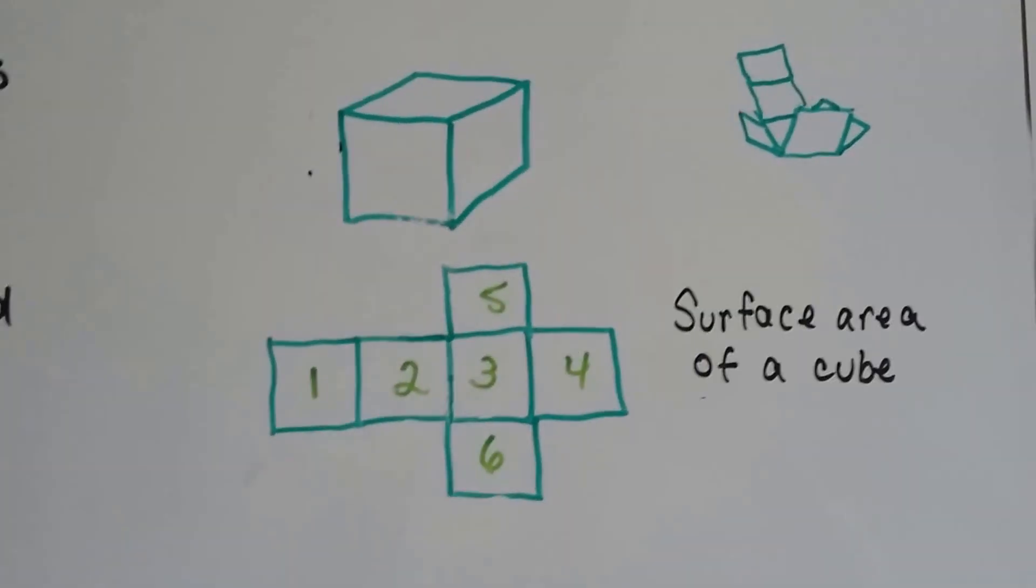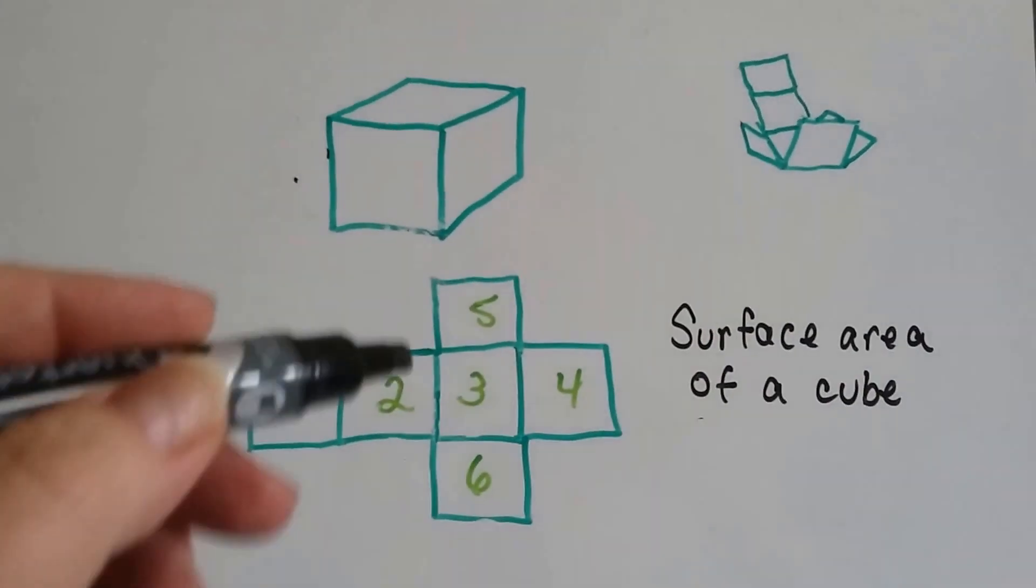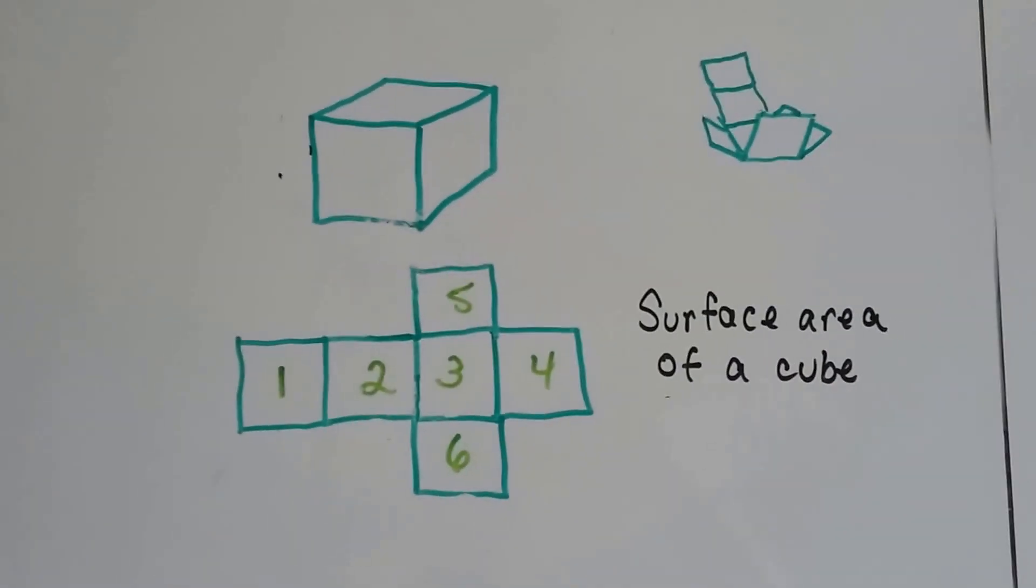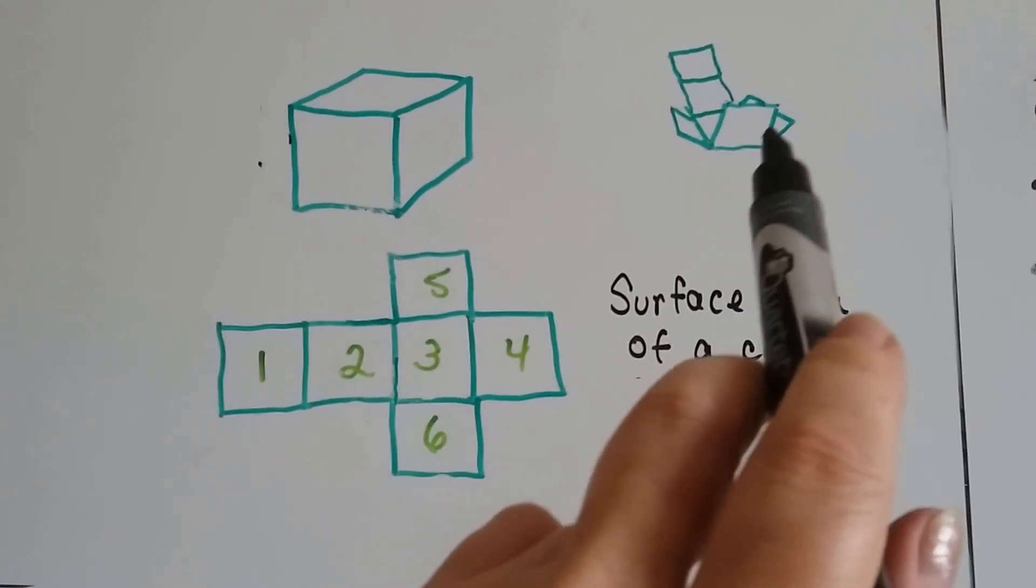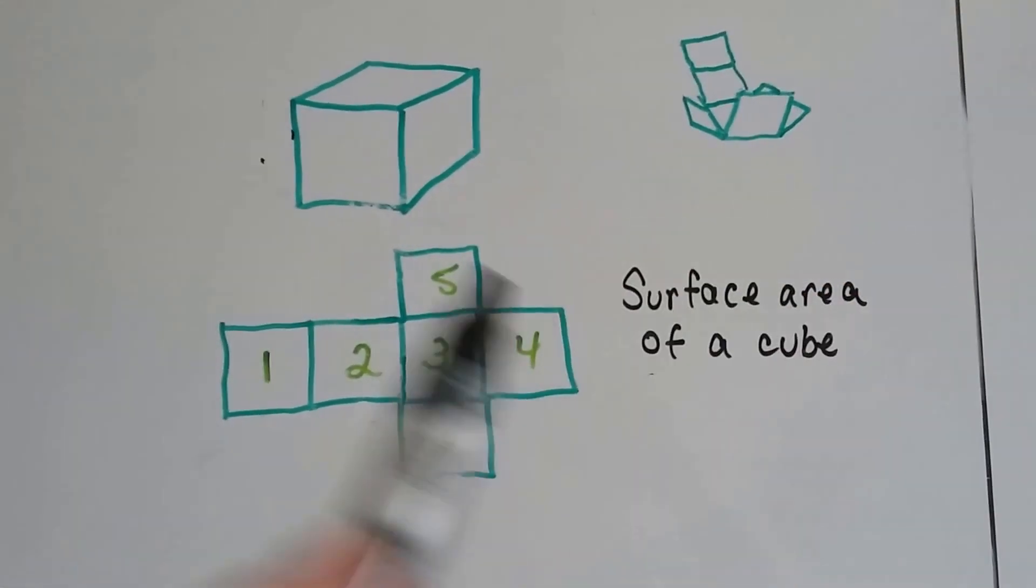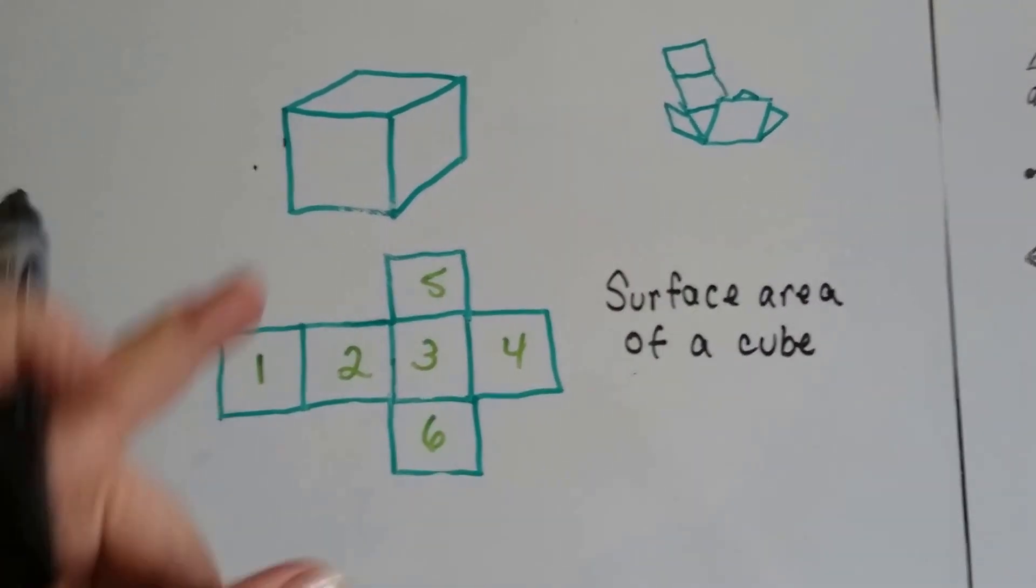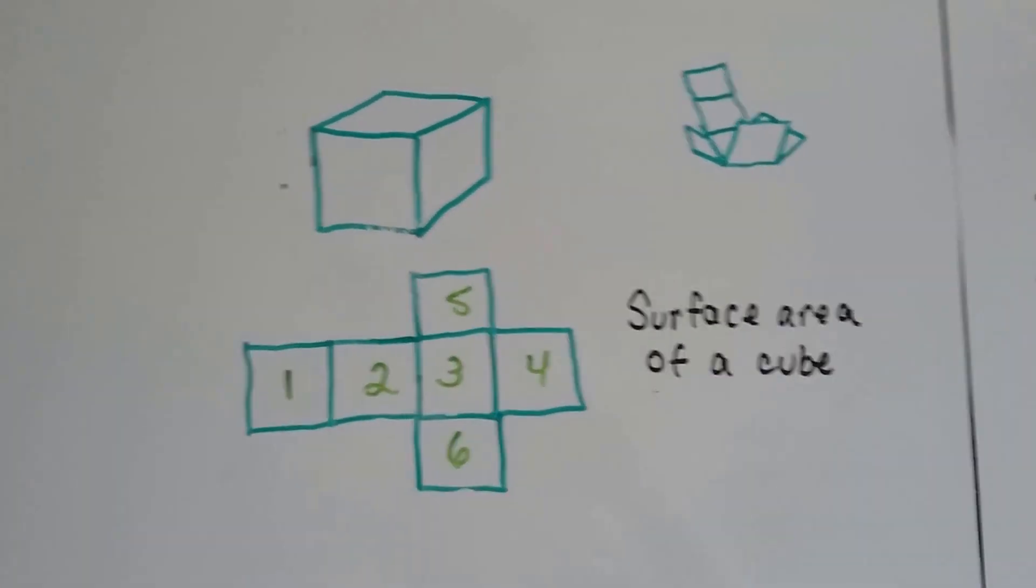So this T-shape right here is the net for this cube. It could be folded up into that solid figure. Just fold it along the lines, like this one would fold over and over. And then these sides would fold up. That would help us find the surface area for a cube.